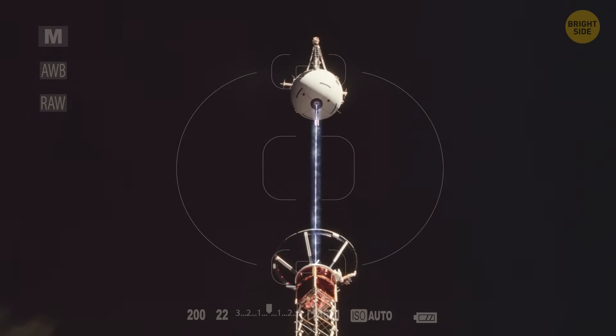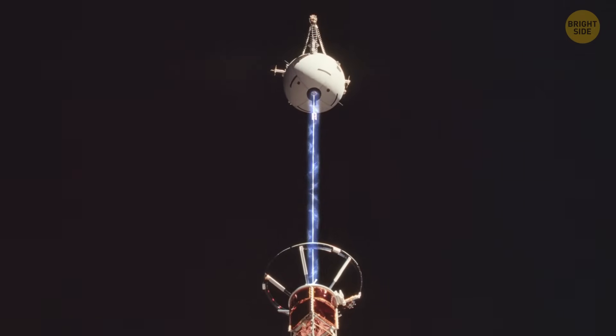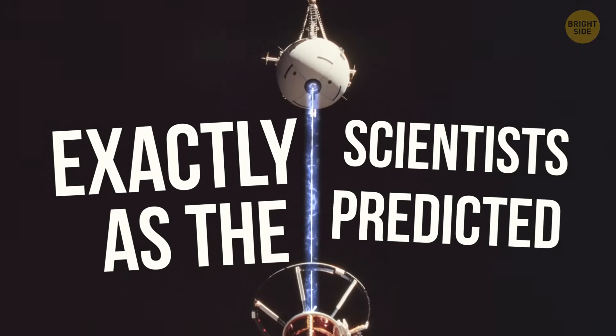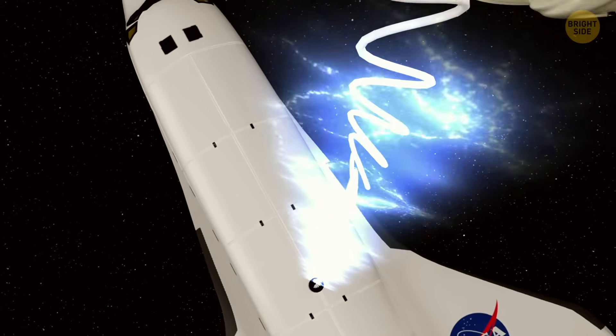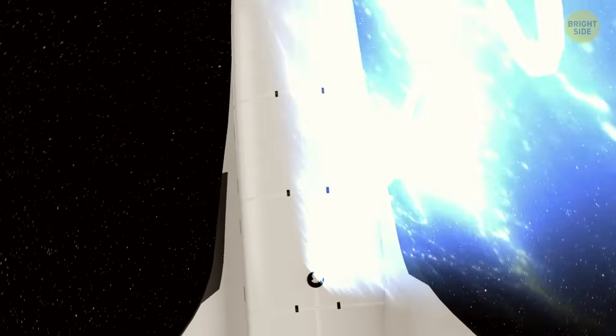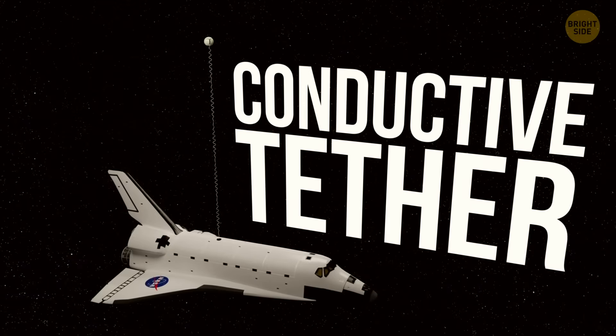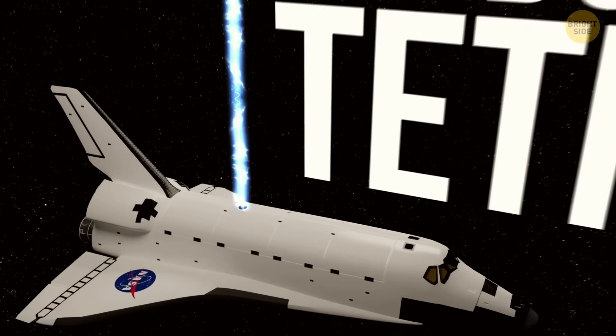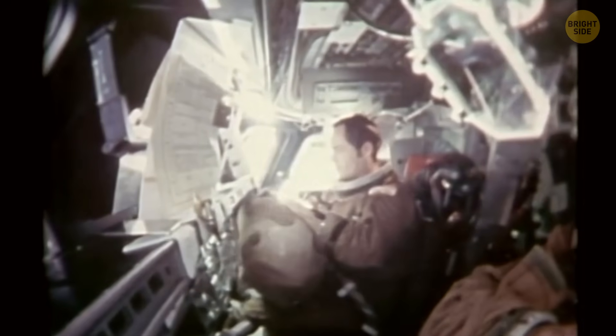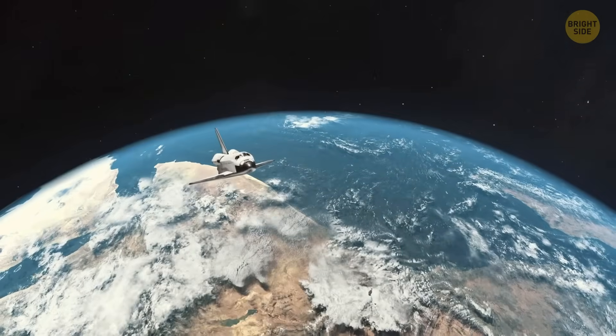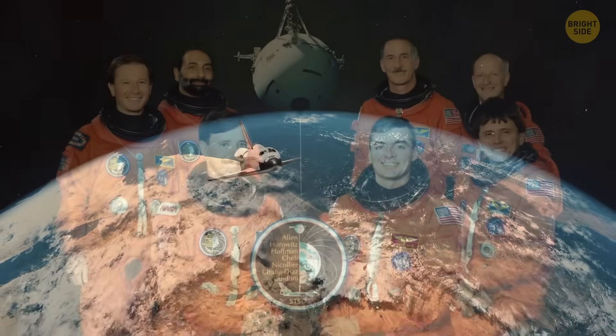Before the failure, the tether really did generate significant electricity, exactly as the scientists predicted. Over 3,000 volts coursed through that cable before it fried. The idea of using conductive tethers for power and propulsion in space wasn't a fantasy. It was all real. The problem wasn't the science, it was the engineering. Space is an unforgiving place, and one small weakness in insulation was enough to take down the whole mission.